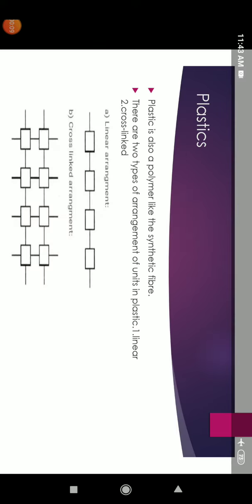Plastics is also a polymer, like synthetic fiber. There are two types of arrangement of units in plastic. Number one: linear. Number two: cross-linked.